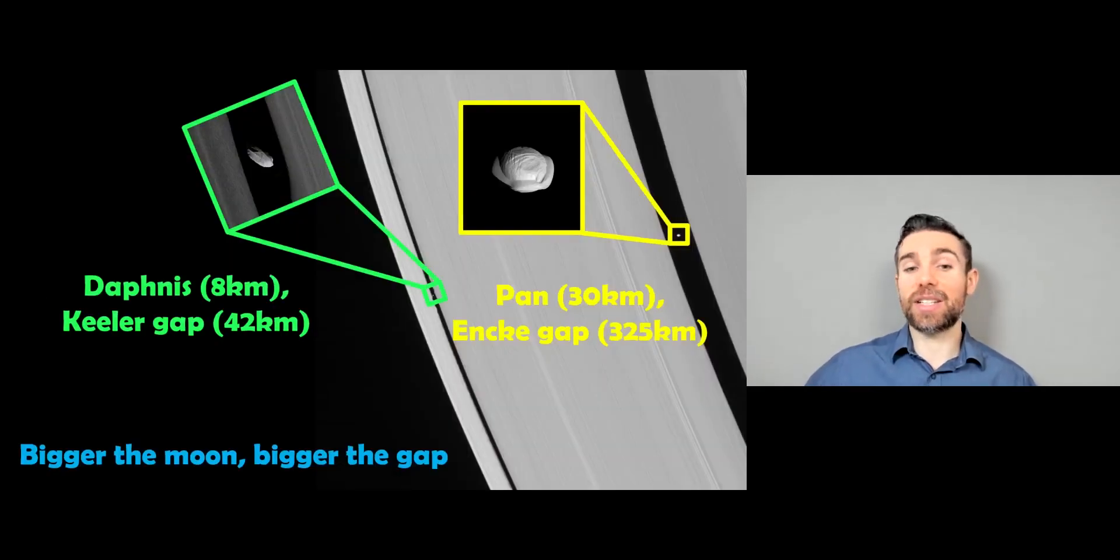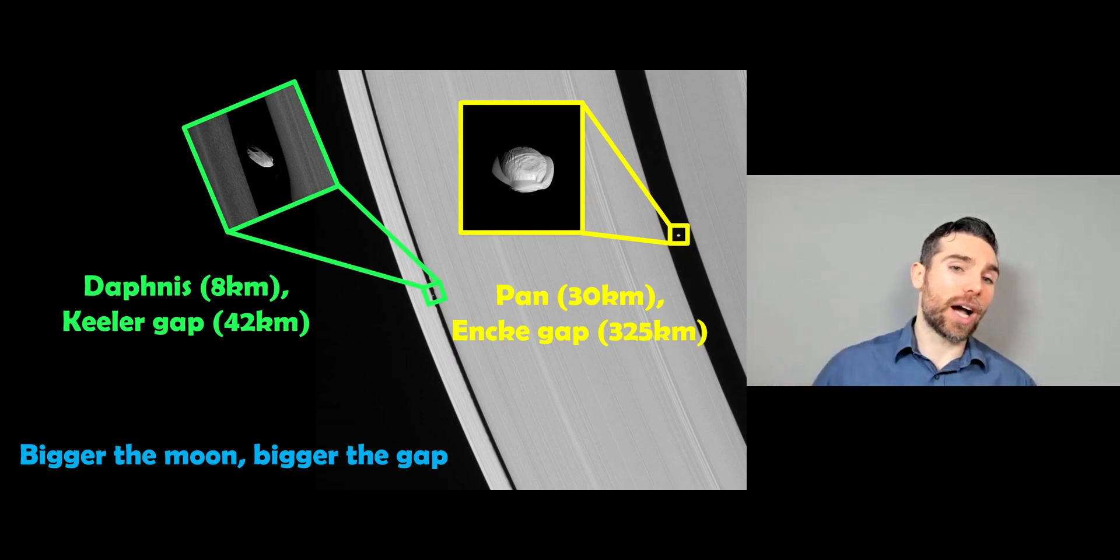Now, a good example here is these two moons. And you can see you've got two gaps and two moons. The two moons are different sizes. So one is about eight kilometres in size and one is about 30 kilometres in size. And then you've got two gaps, one at about 40 kilometres and one at just over 300 kilometres. And you can see that the bigger the moon, the bigger the gap. The bigger the moon, the more gravitational force is going to exert on the ring. And it can clear out a bigger gap the bigger it is. So this is a key thing here that we're going to use to then find an expression or find out how we can use that to find the mass of the moon.